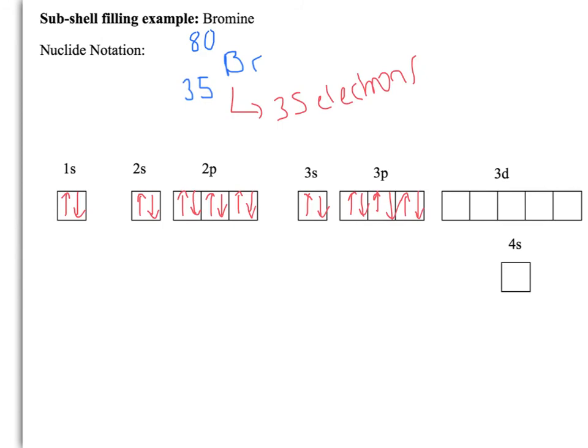Now, the key thing to point out here is actually the 4s is going to fill before the 3d. So we're up to 20 there. This doesn't happen for all different types of atoms. Some will fill the 3d before the 4s. It does depend on an atom-by-atom basis, but bromine, it happens there first. So we're up to 20.